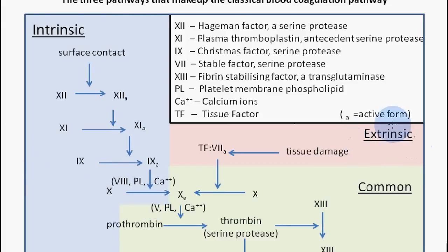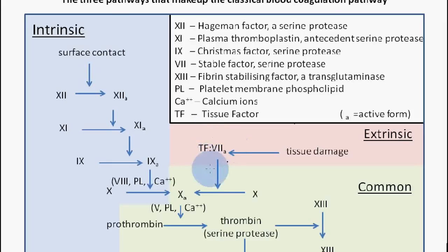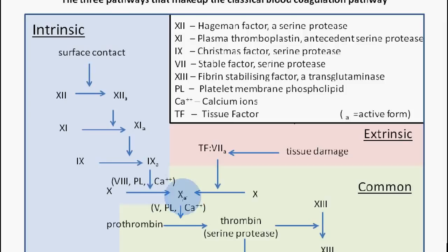The extrinsic pathway is a little bit different. We have some form of tissue damage which causes release of tissue factor, also known as factor 7a. This tissue factor or factor 7a also enables the conversion of factor 10 into factor 10a. Once we reach this point, the two pathways converge and form the common pathway, which begins with factor 10a.